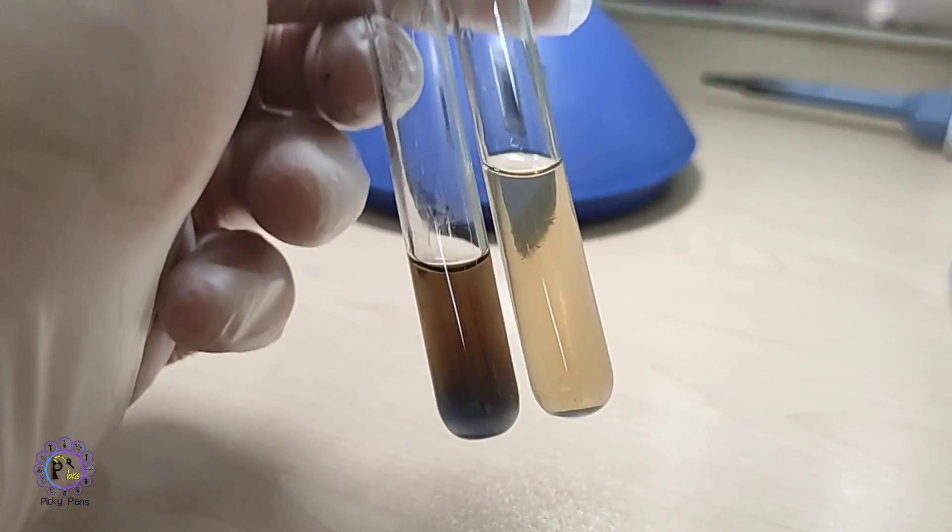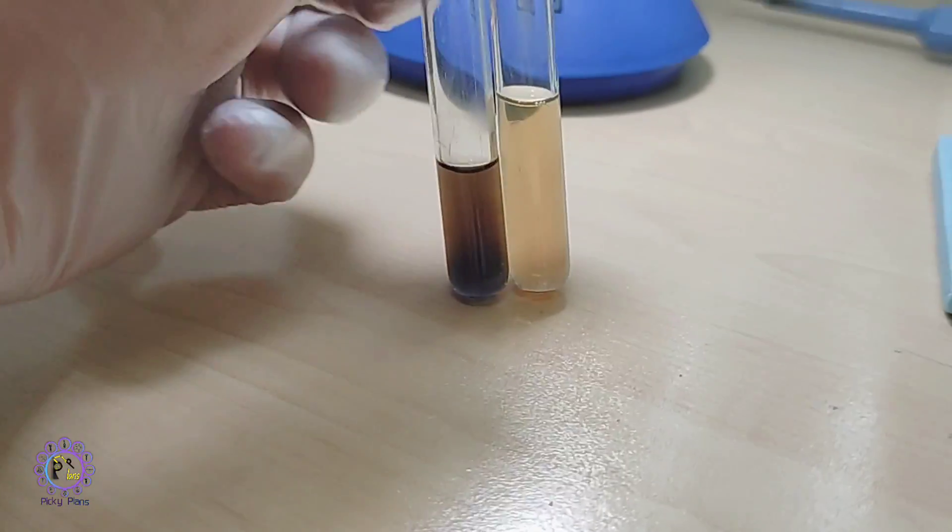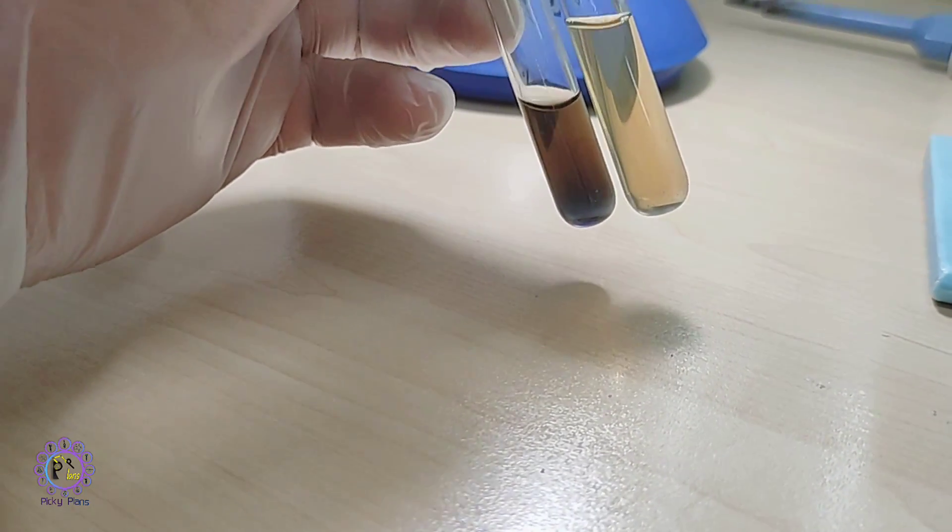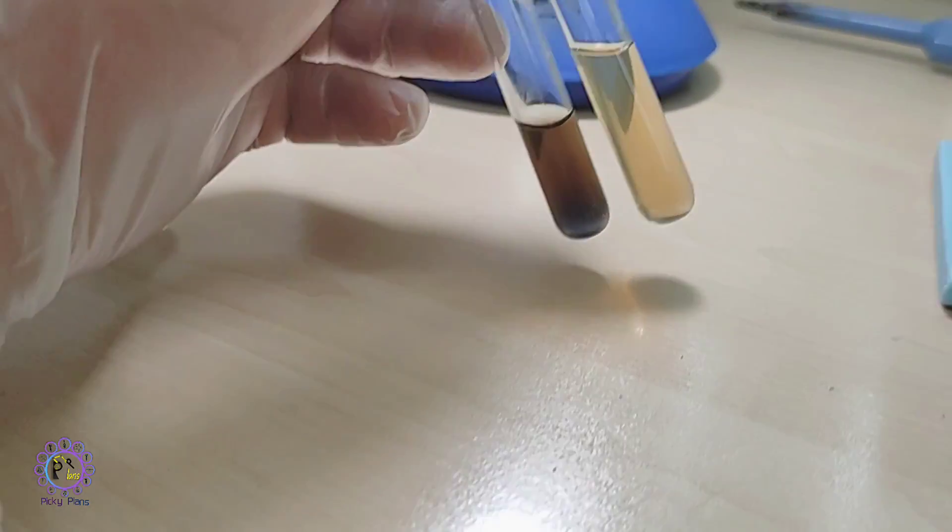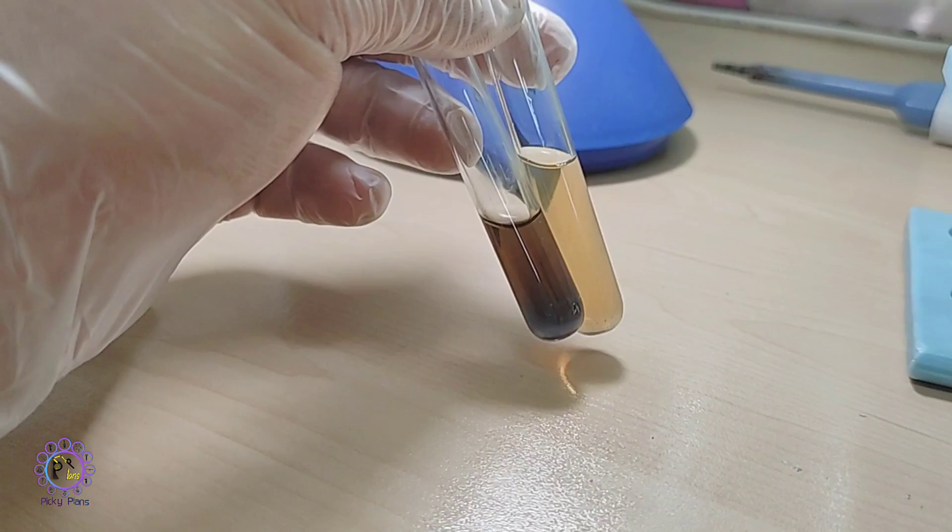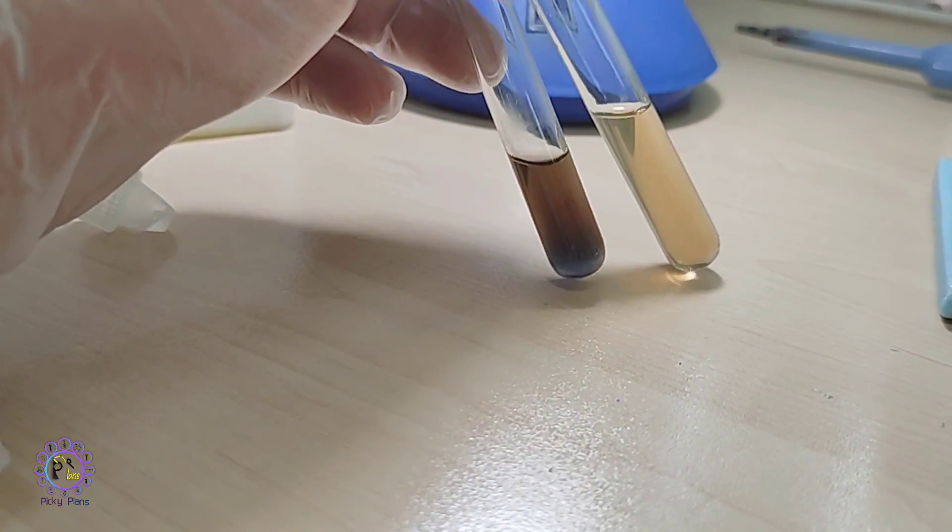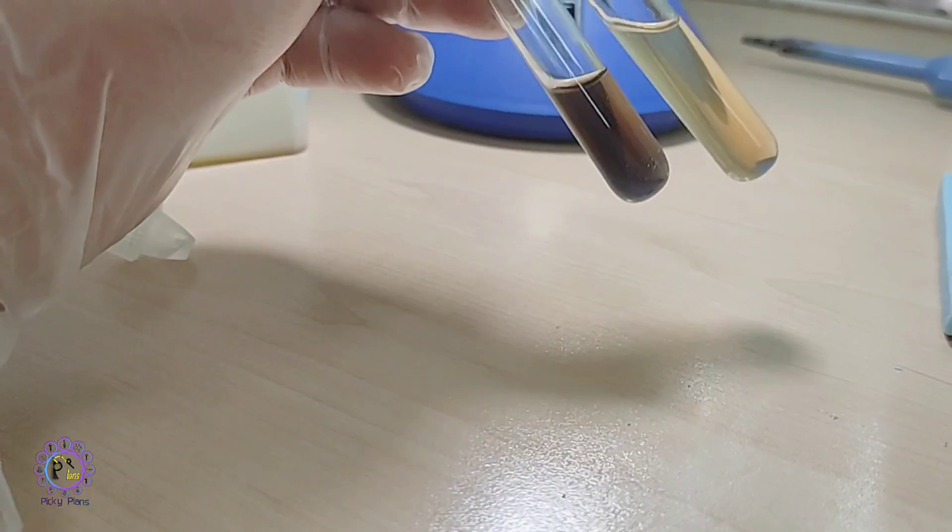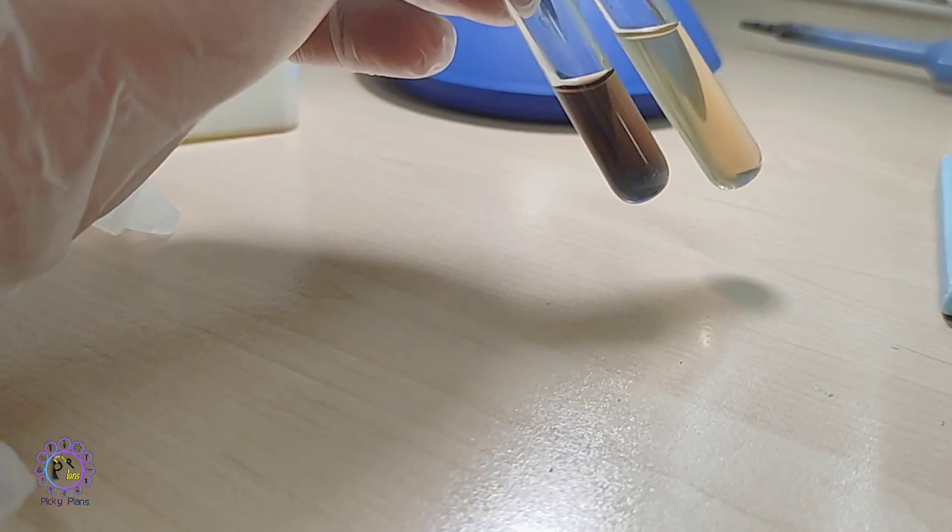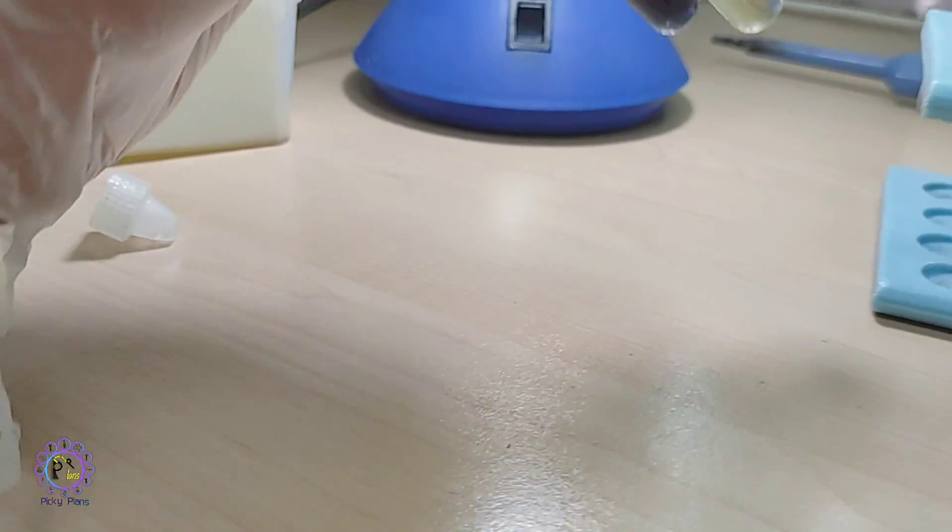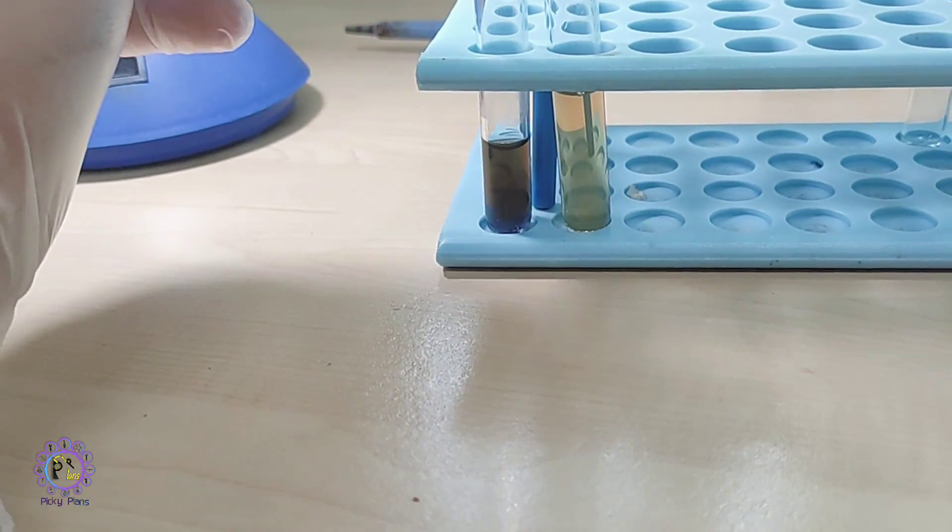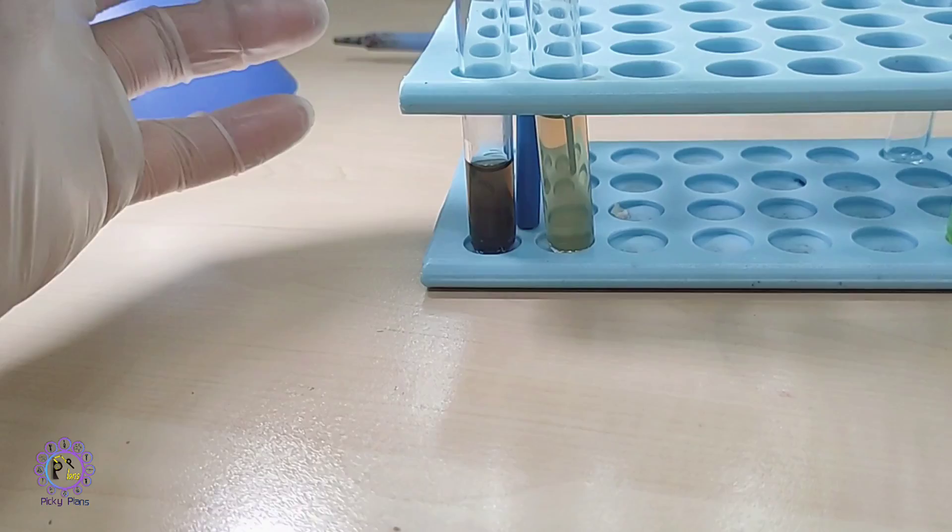Look at that. We have color change in both tubes, but actually we only have gold in the left tube. The right tube doesn't contain any precious metals. This is just due to the presence of high concentration of copper in the solution.